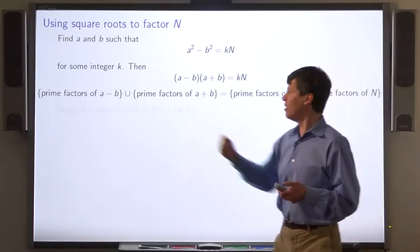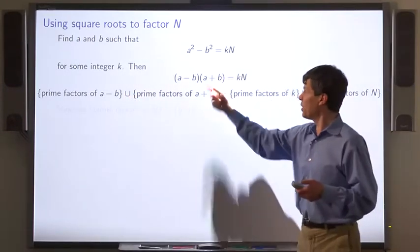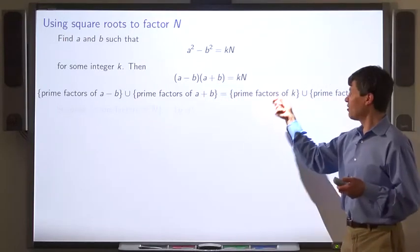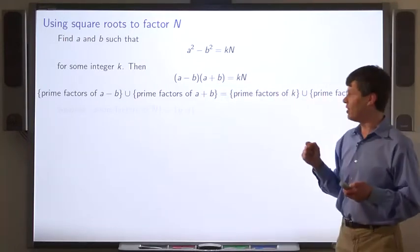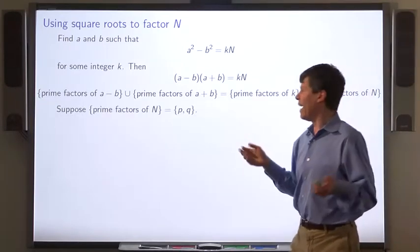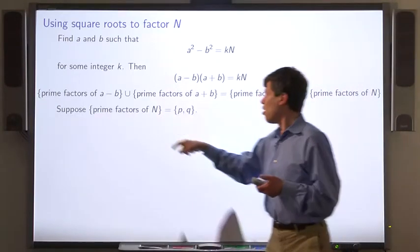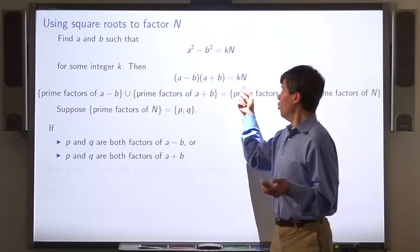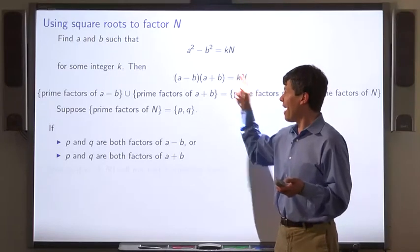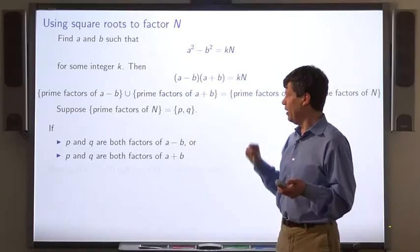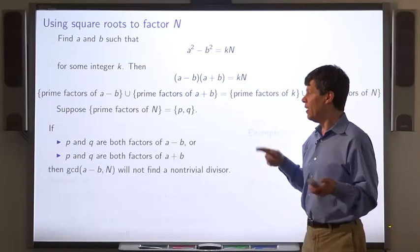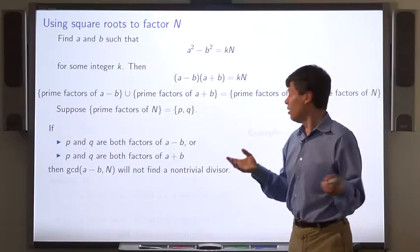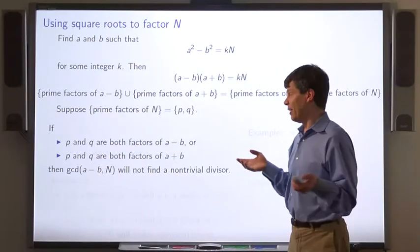Now, the prime factors of a minus b together with the prime factors of a plus b equals the set of prime factors of k together with the set of prime factors of n. So let's say that the prime factors of n are p and q. However,